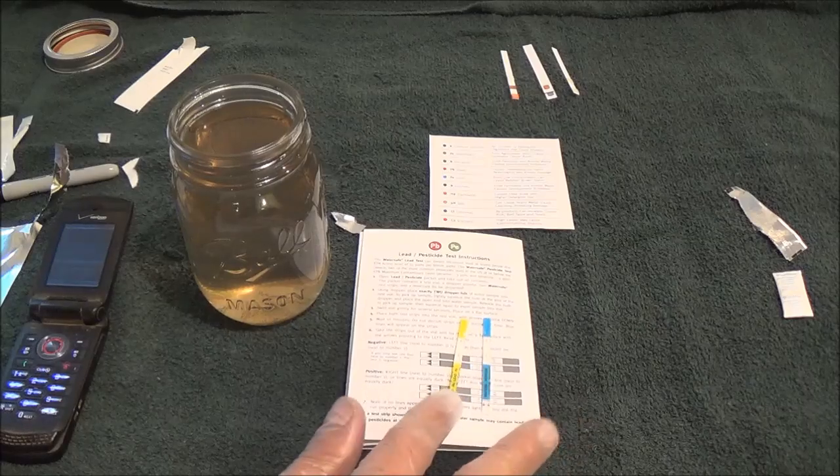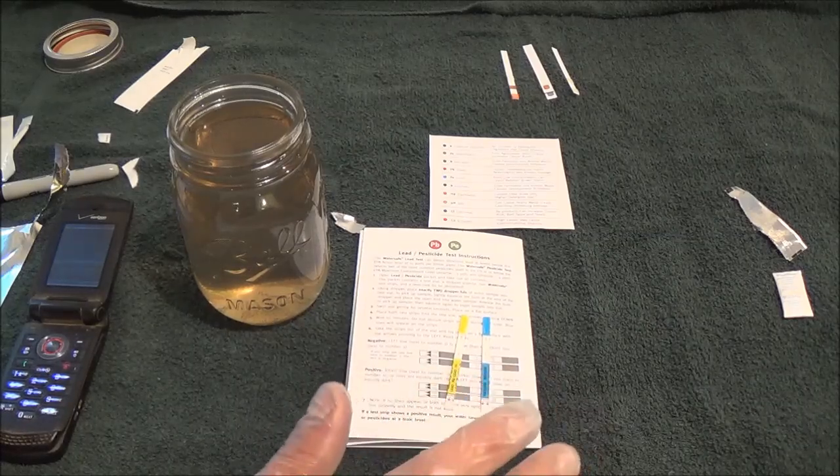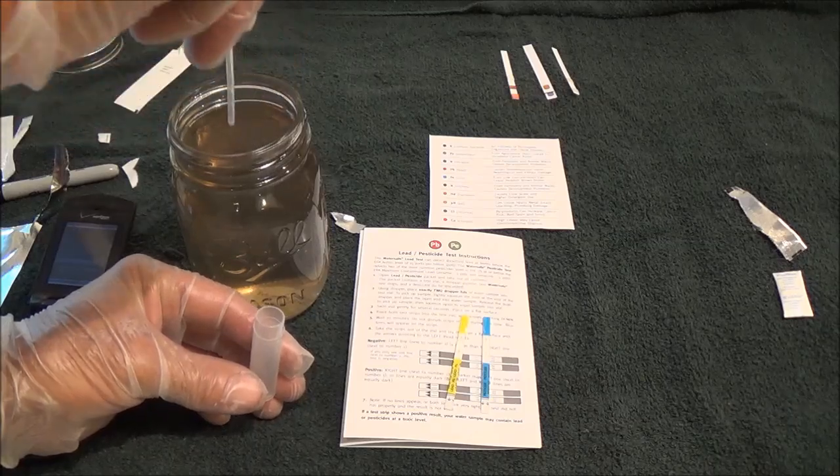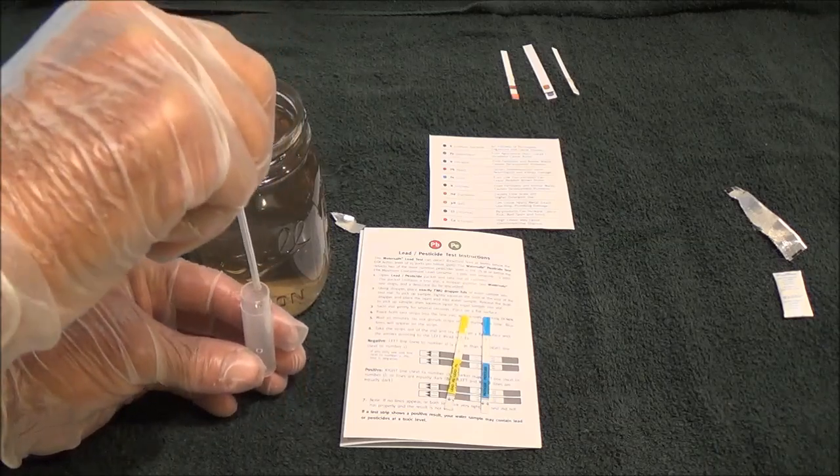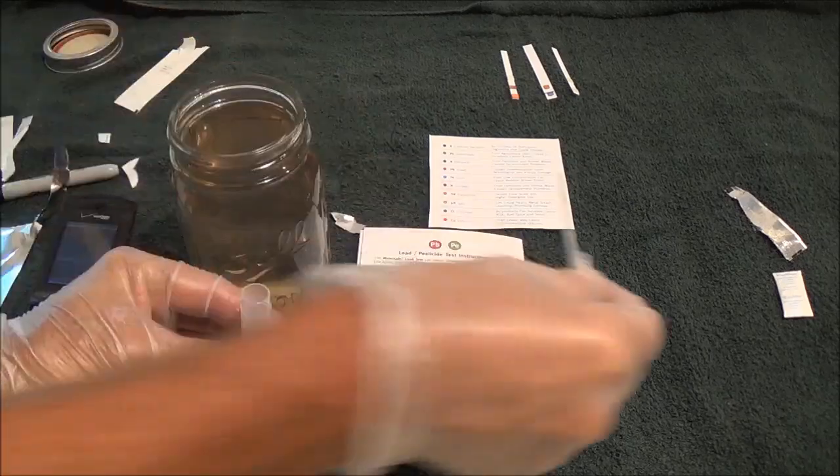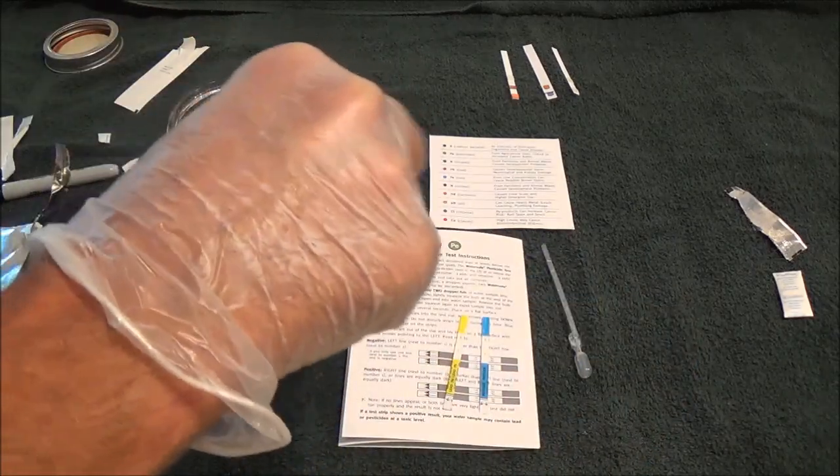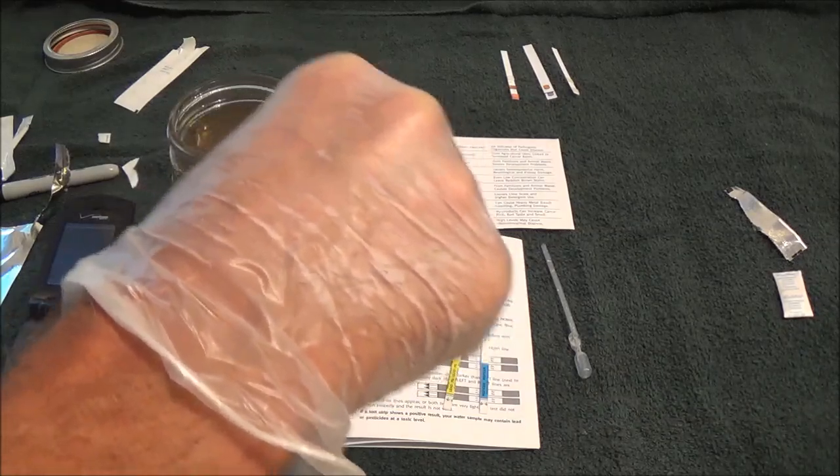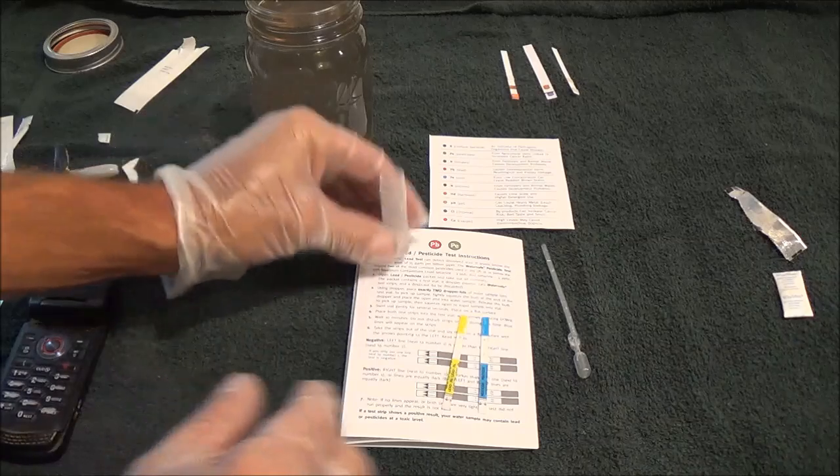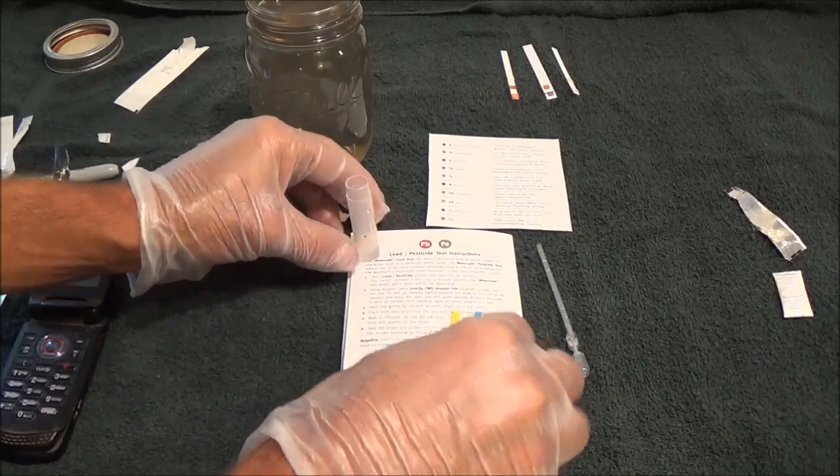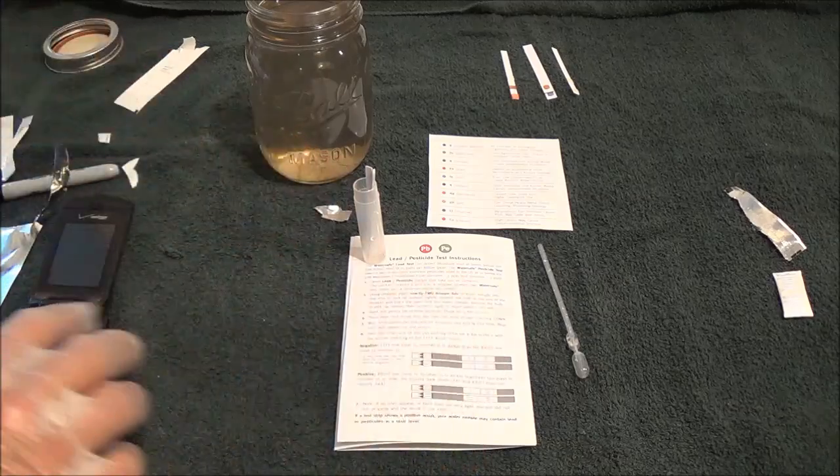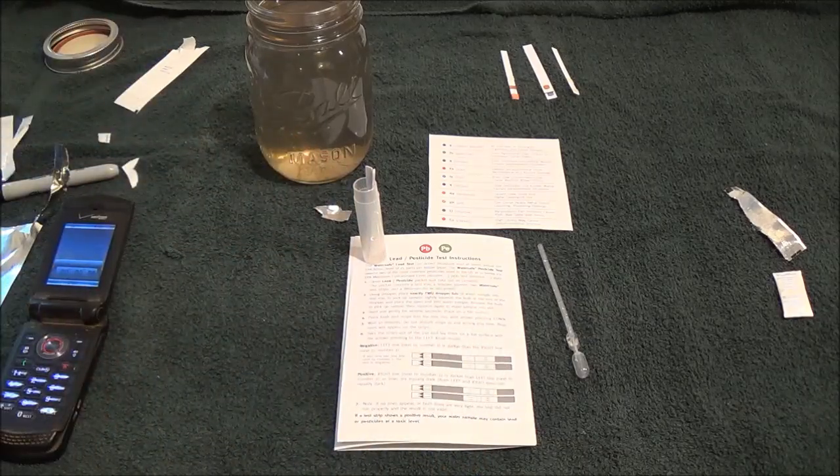Okay, here you can see our two test strips. The yellow one is lead, the blue one is pesticide. This is our little dropper. We're supposed to compress this completely down. There's one, two. Now I'm supposed to swirl this gently for a few seconds. Place this on a flat surface and put the strips in, the arrows pointing down. Alright, we'll start the stopwatch. We'll be back in 10 minutes.